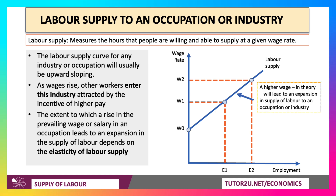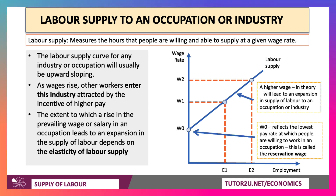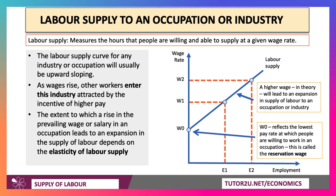A higher wage, in theory, leads to an expansion of labour supply. W0, where the labour supply curve cuts the y-axis, is sometimes called the reservation wage. It's the lowest pay rate at which people are willing to work in an occupation, and that will vary from job to job.